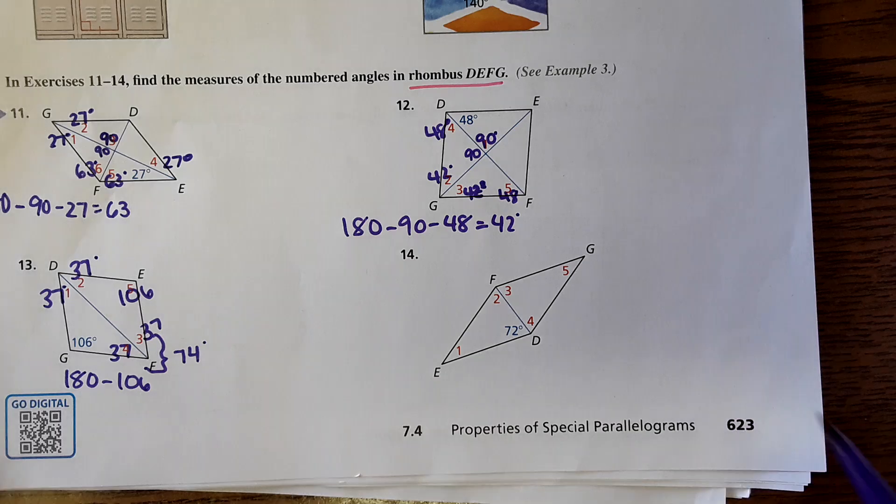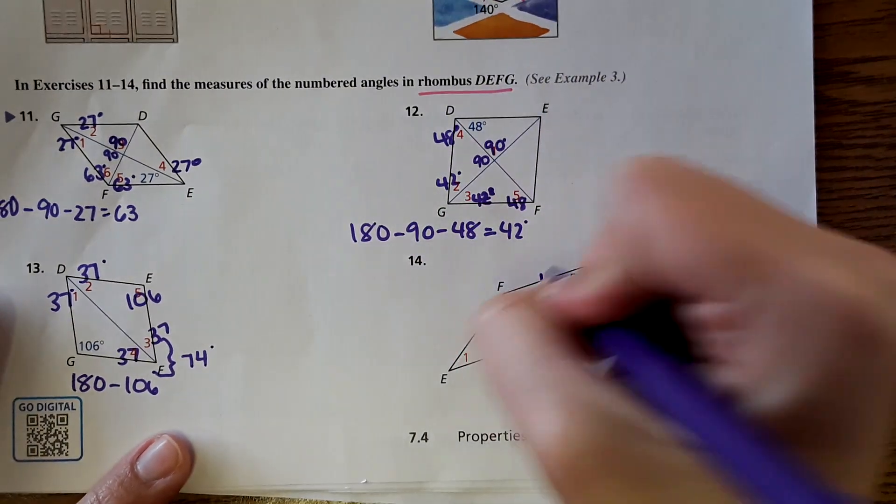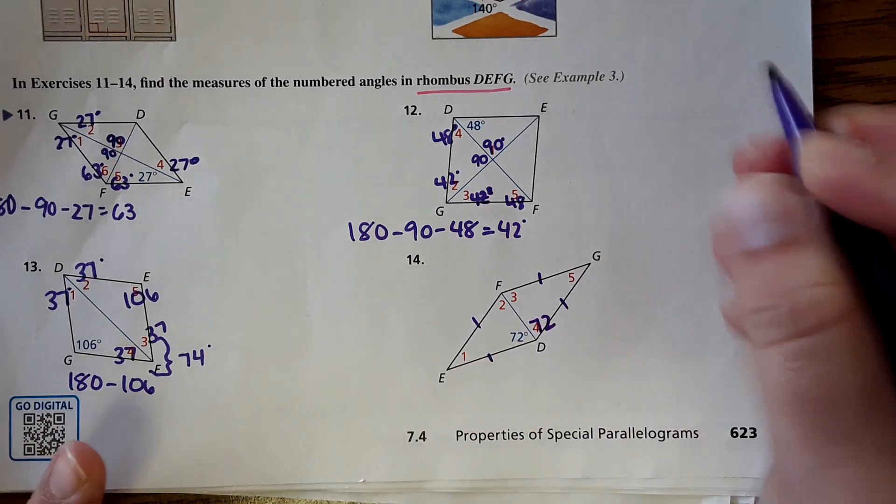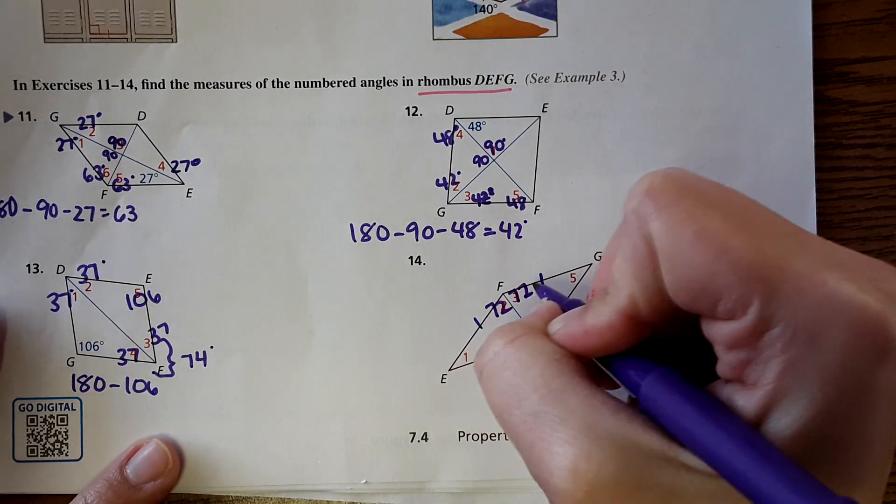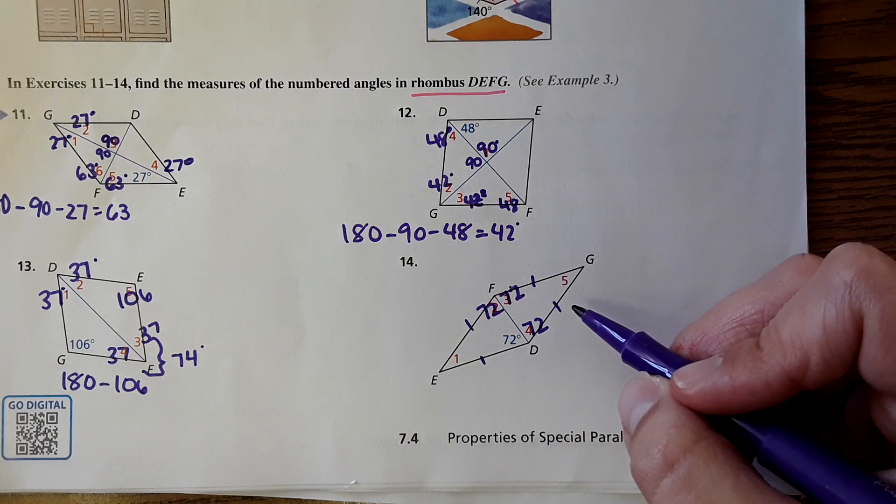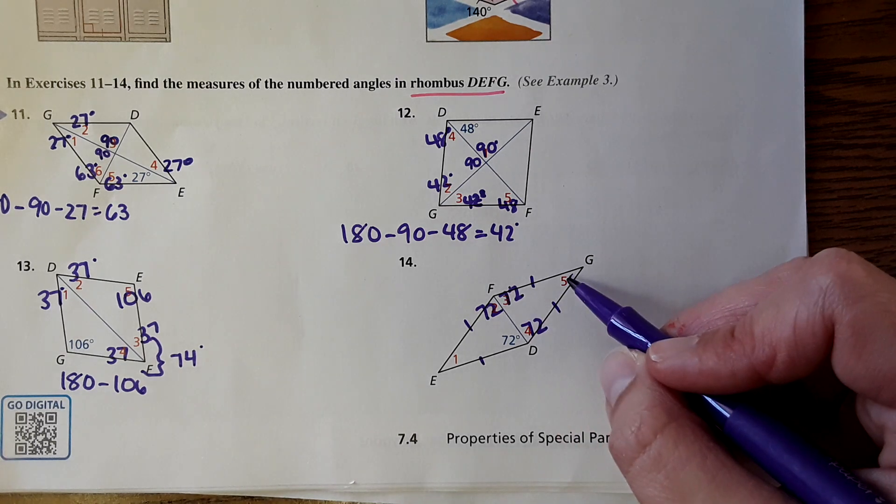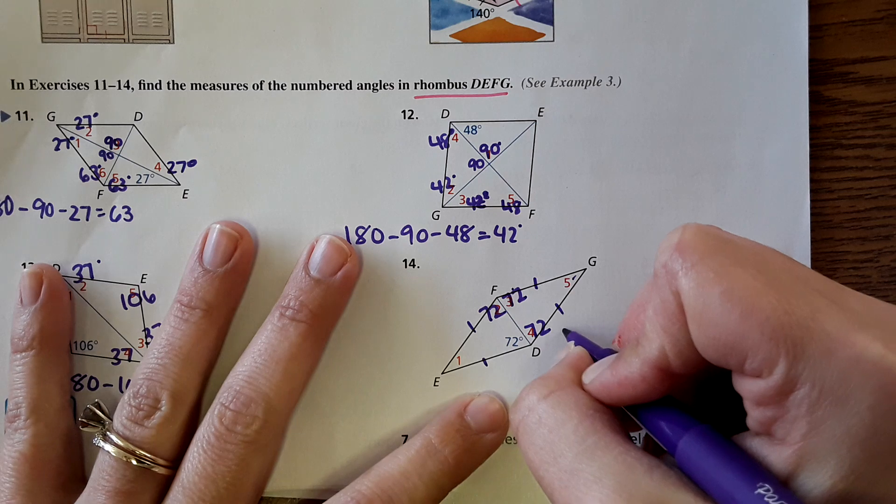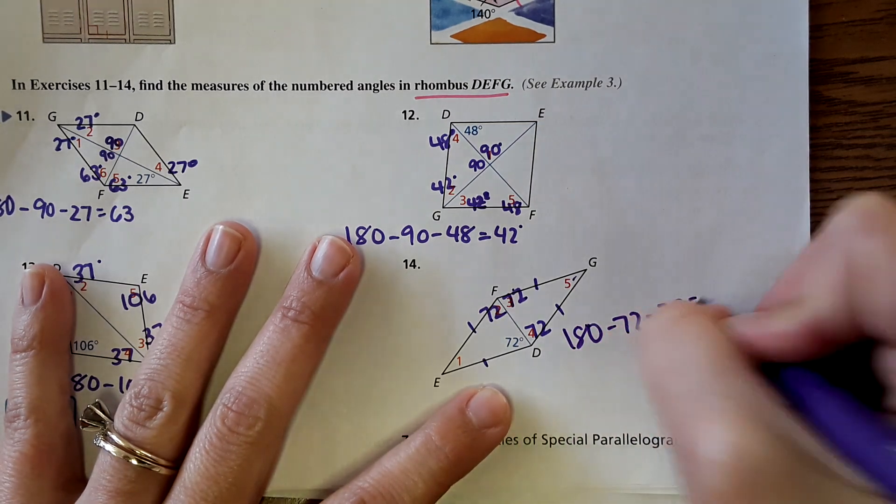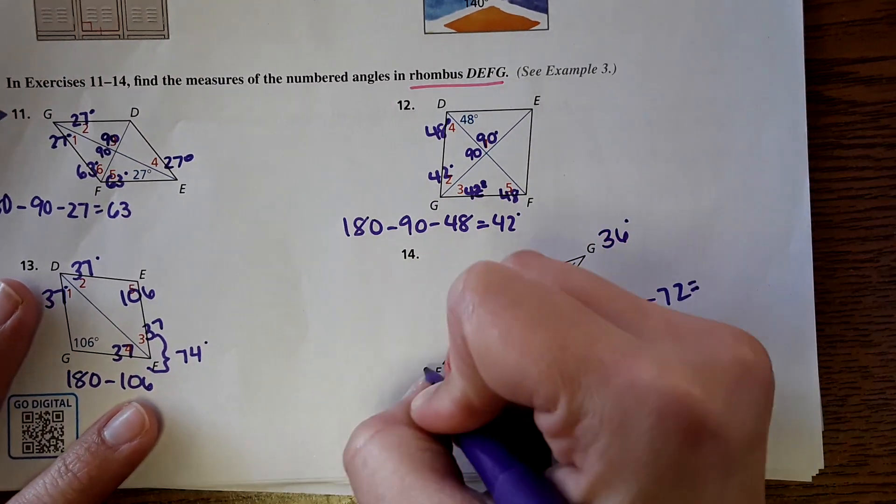And number 14. The diagonals. It tells me in the description it's a rhombus. So I know it has to be a rhombus. That means the diagonals bisect. So this would be 72. Then this would also be 72 and 72. These two consecutive angles should be supplementary. So it would be 72, 72 and then this angle. 180 minus 72 minus 72 equals what? 36. It is 36. I don't know why my brain doesn't think it's 36, but yep, it's 36.